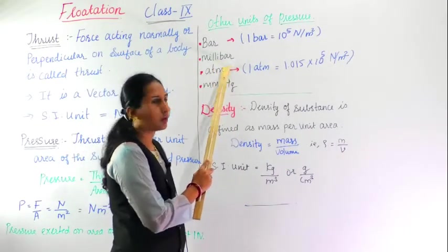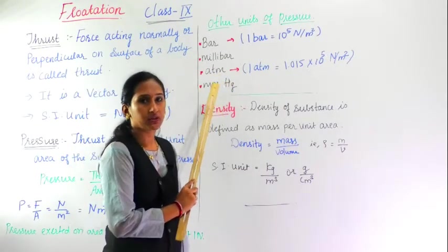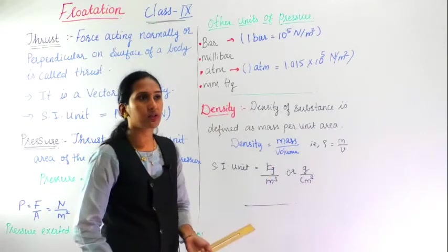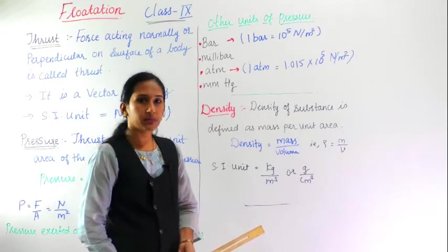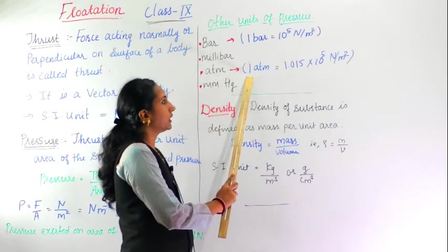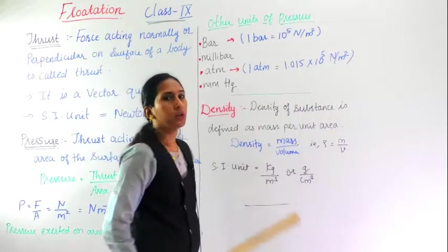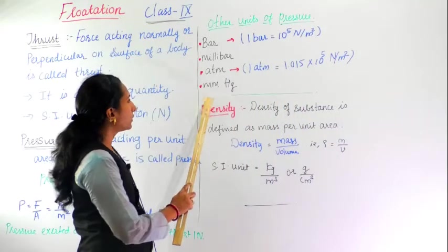Then third is atm. Atm means atmospheric pressure. You have studied the instrument such as barometer. In that, this atm unit is used. 1 atm equals 1.05 into 10 raise to 5 Newton per meter square. And the fourth unit is mmHg.